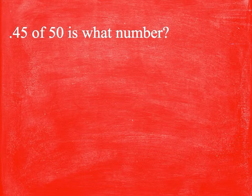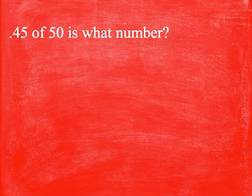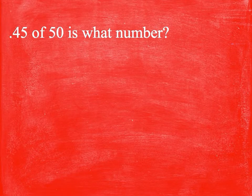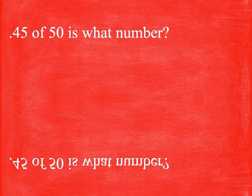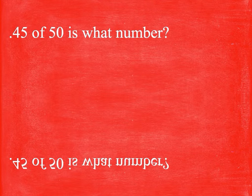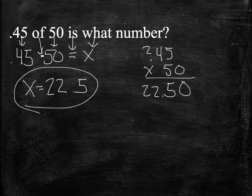So that's our last type of example there. You can see .45 of—is multiply—50 is what number, that's always a variable. Hopefully all this makes sense. Again, feel free to ask any questions anytime. I will see you guys later.